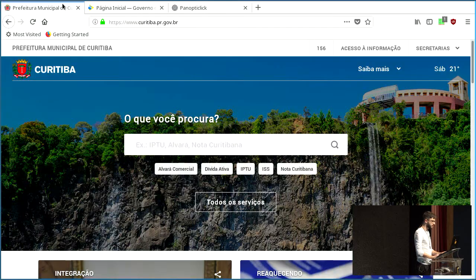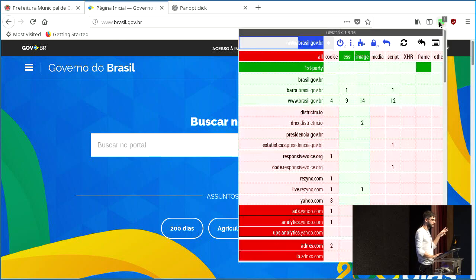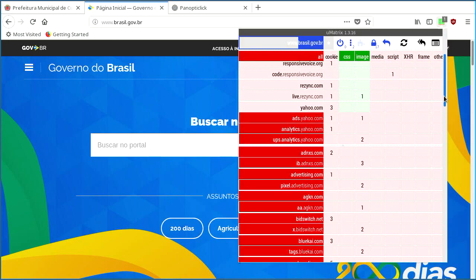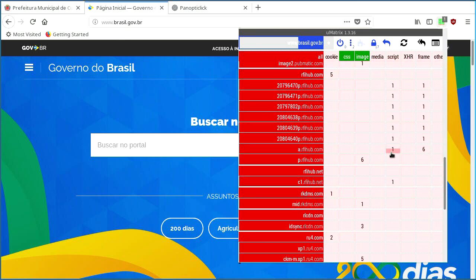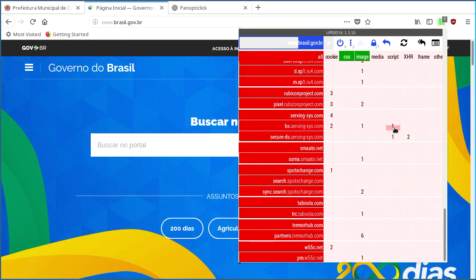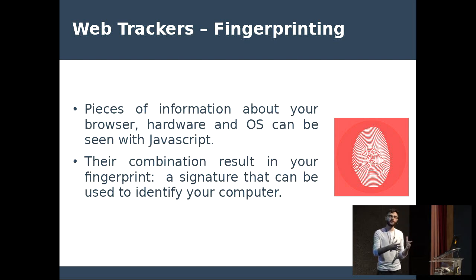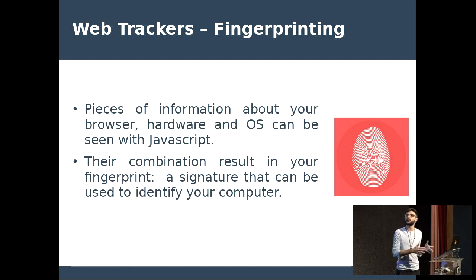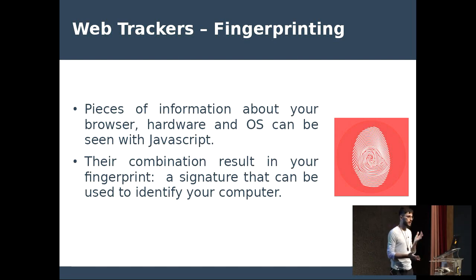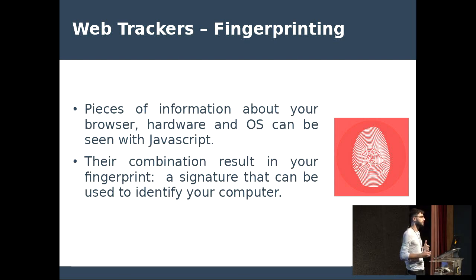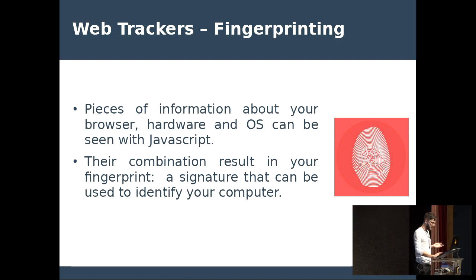There is another technique I haven't mentioned yet, which uses JavaScript. If you pay attention, there is a lot of JavaScript injection on web pages, and this may be used for web tracking. Fingerprinting is when you use JavaScript to retrieve information about the user's hardware, browser, and operating system — you can get a lot of information about that person's computer. If you combine all of those data points and the combination is unique, it means that your fingerprint is unique as well. This means that if you allow web trackers to send these JavaScript requests, you're basically allowing them to identify you — it's a signature of your computer and browser.